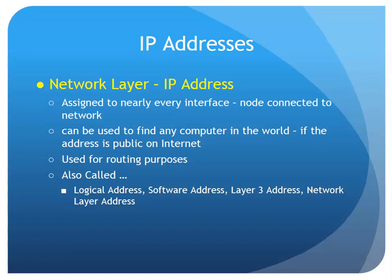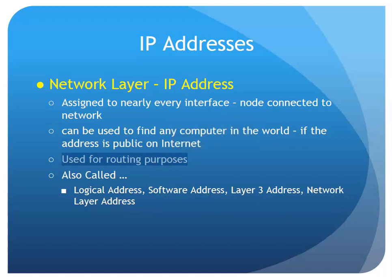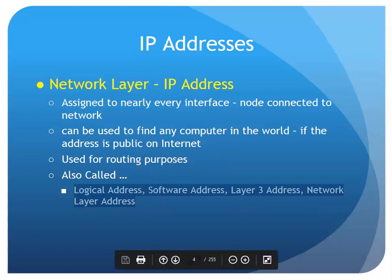At the network layer, we have IP addresses. These are assigned to every interface so that nodes on the network have unique IP addresses. They can be used to find any computer in the world — there's a logic to it with the different octets. These are mainly used for routing purposes. Routers use IP addresses to route traffic to the correct network. We also have multiple names for them: logical address, software address, layer 3, network layer address, etc.